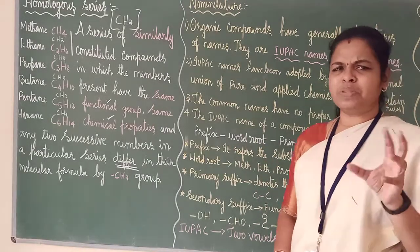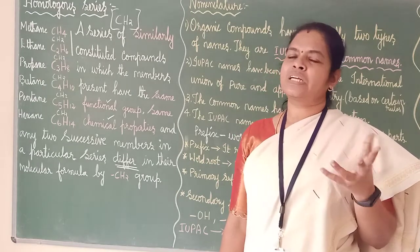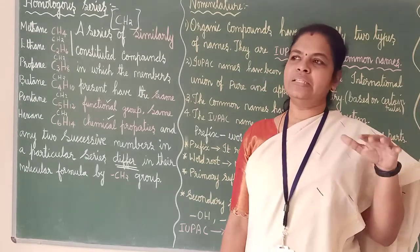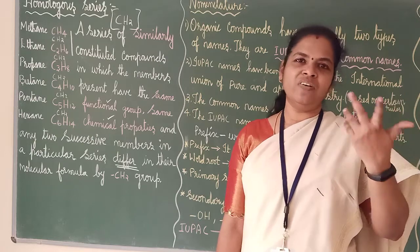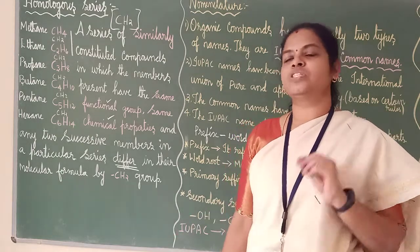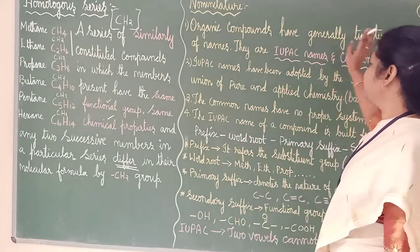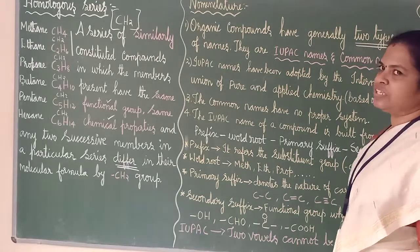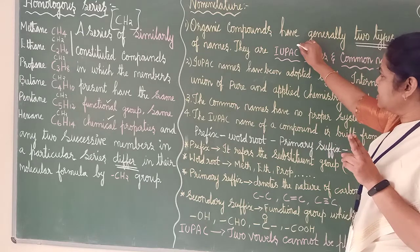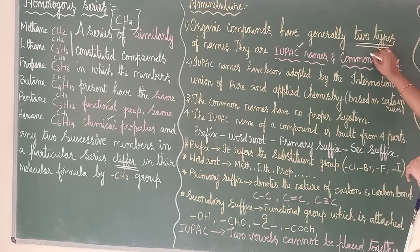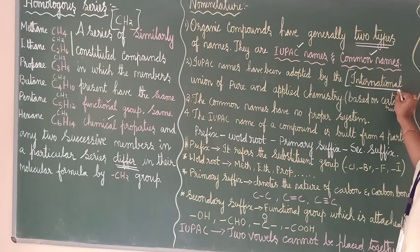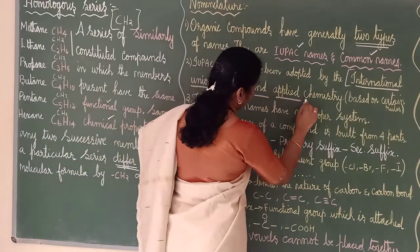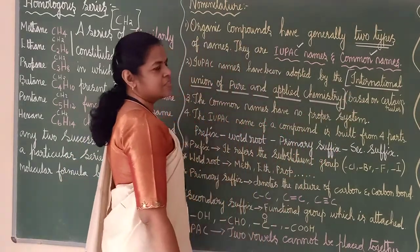We will see how they are naming. There should be some structure to name — they can't name like whichever name they like, not like how we name a dog or a cat. There are some rules which should be followed. Organic compounds have generally two types of names: one is IUPAC name and the other one is common name. IUPAC names have been adopted by International Union of Pure and Applied Chemistry based on certain rules.